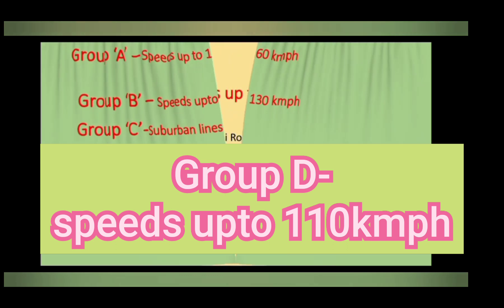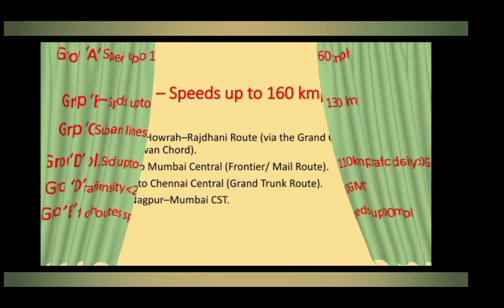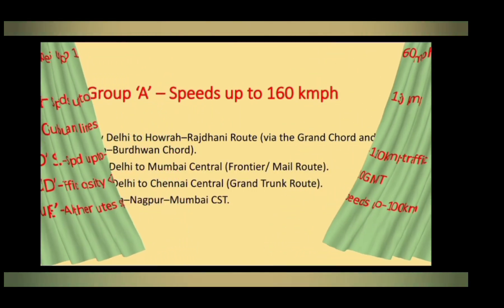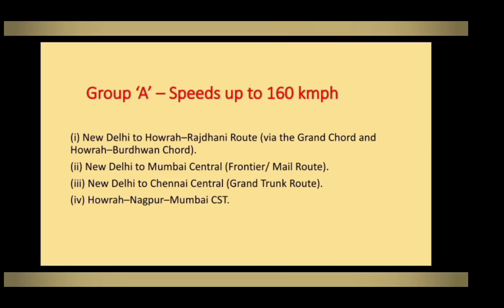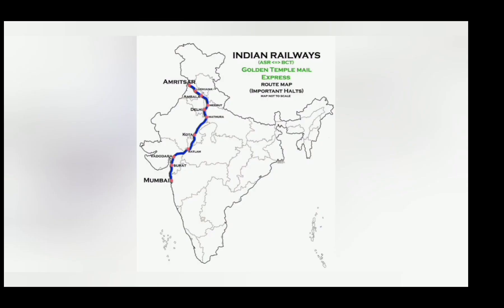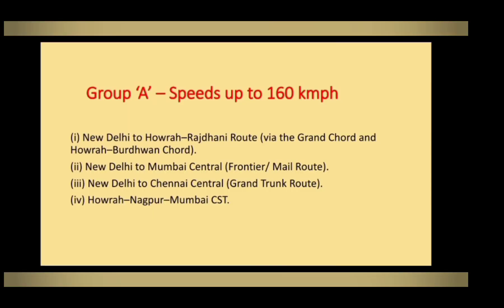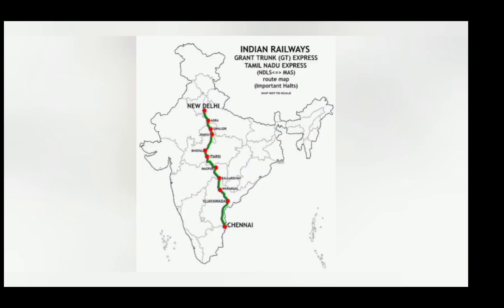In this video we can see the Group A routes in India and Group B and D routes in Southern Railway. The New Delhi to Howrah Rajdhani route is a Group A route, and the New Delhi to Chennai Central Grand Trunk route is also a Group A route.